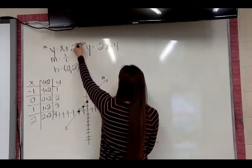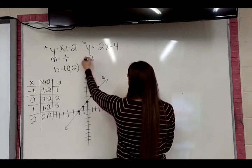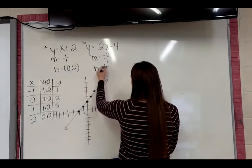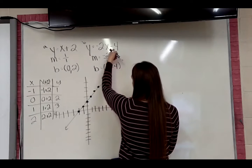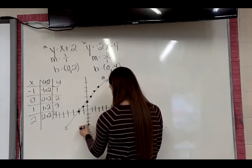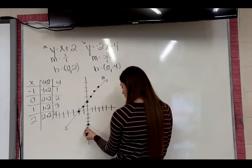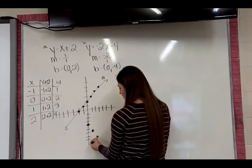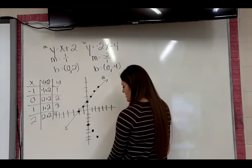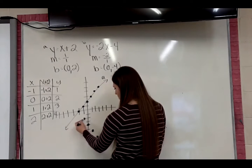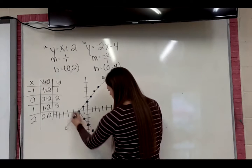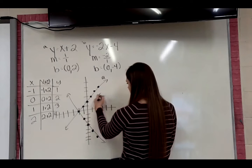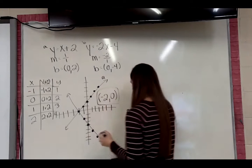Now graph line B: y equals negative 2x minus 4. The slope is negative 2, or negative 2 over 1. The y-intercept is the point (0, negative 4), so go down to negative 4 on the y-axis. Slope is negative 2 over 1, meaning go down 2, right 1. To go backwards, go up 2, left 1. The two lines intersect at the point (negative 2, 0), so my solution is (negative 2, 0).